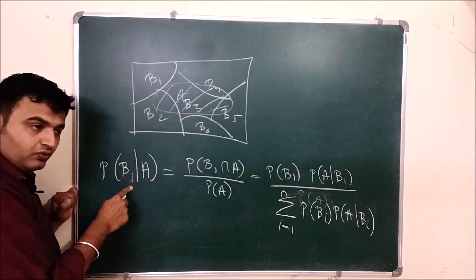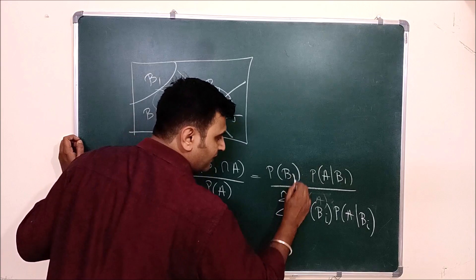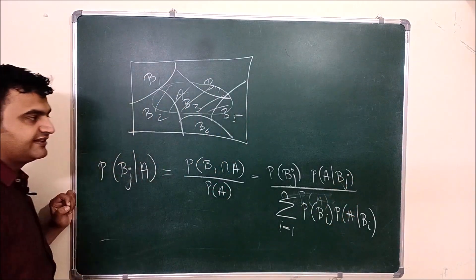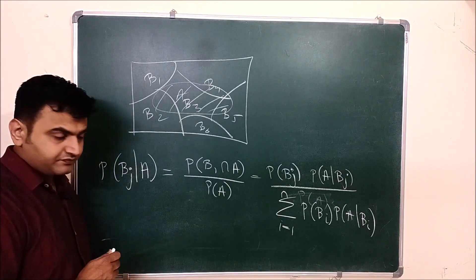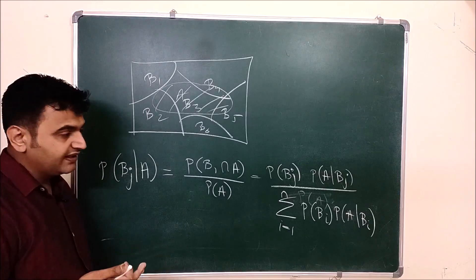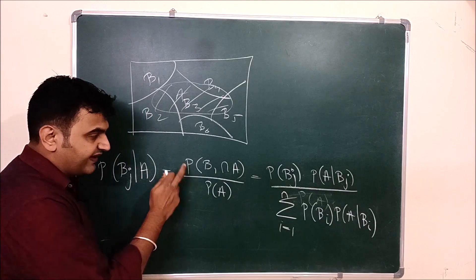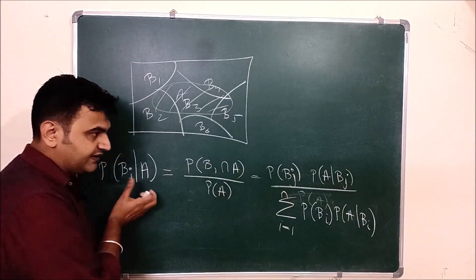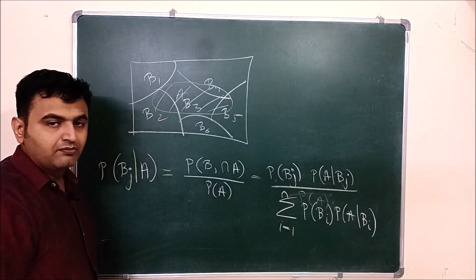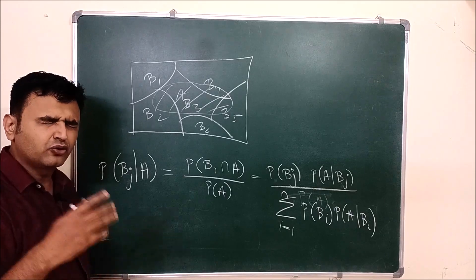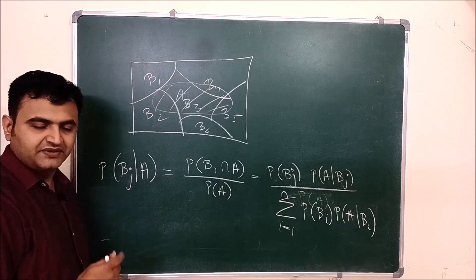Similarly, for any general Bj, the formula is P(Bj)·P(A|Bj) divided by the sum of P(Bi)·P(A|Bi) for i from 1 to n. This is the general Bayes' theorem. Rather than memorizing the formula, the easy way is: first write the definition, split up using the reverse direction, then divide by the total law of probability.